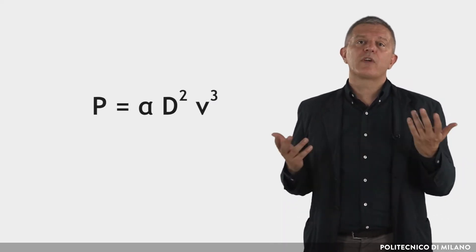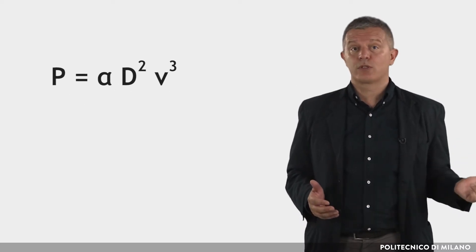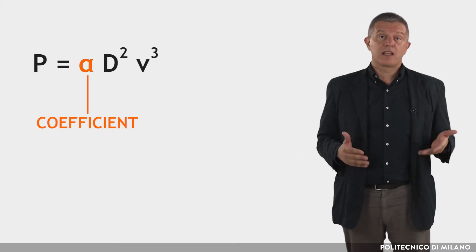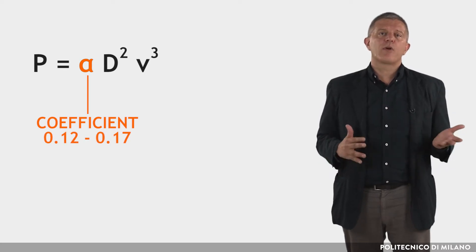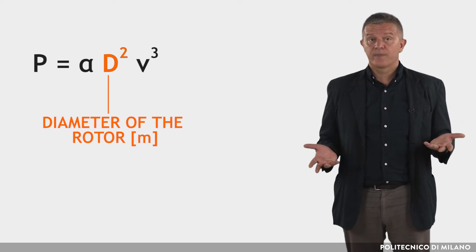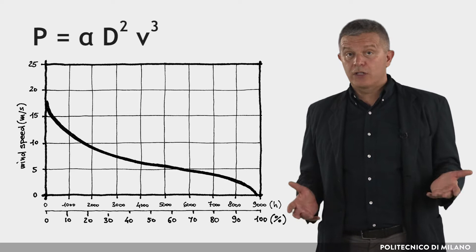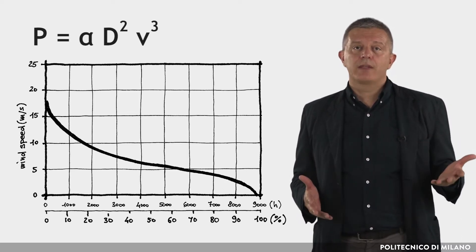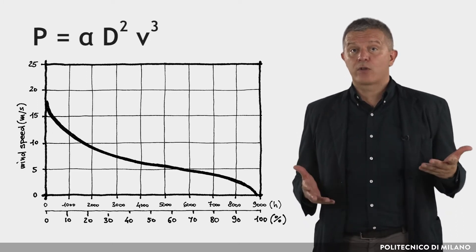This formula can be used to evaluate the electric power that a horizontal axis wind turbine can produce. P is the electric power delivered. Alpha is a coefficient depending on the turbine type, ranging from 0.12 to 0.17. D is the diameter of the rotor and V is the wind speed. Energy production depends on the wind speed distribution, which can be read on the so-called wind duration curve, referred to the number of hours of the year.